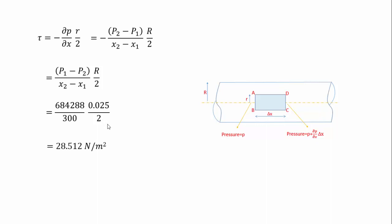So the shear stress at the pipe wall is 28.512 N/m². Thank you, hope you have understood this video. If you have any suggestions or queries, please drop them in the comments. Thank you.